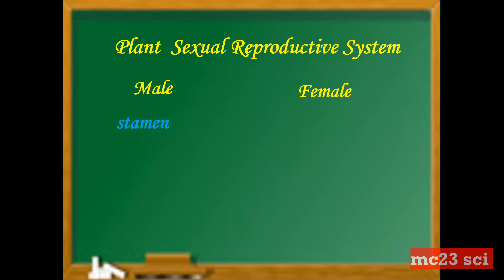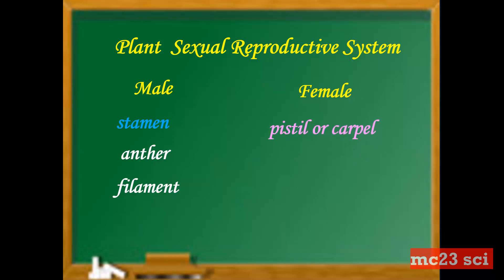In the male, the stamen is the male reproductive organ. It consists of the anther and the filament. For the female, the pistil or the carpel is the reproductive organ. It consists of stigma, style, and ovary.